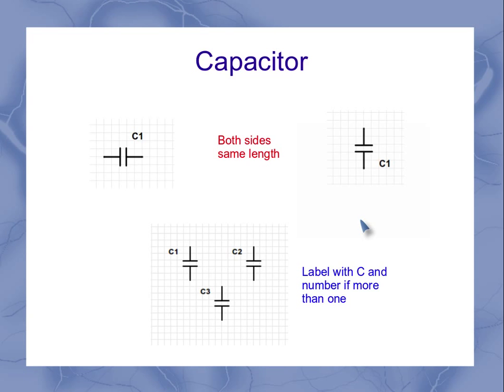If you've got a circuit that's got multiple capacitors in it, we generally label them things like C1, C2, and C3.